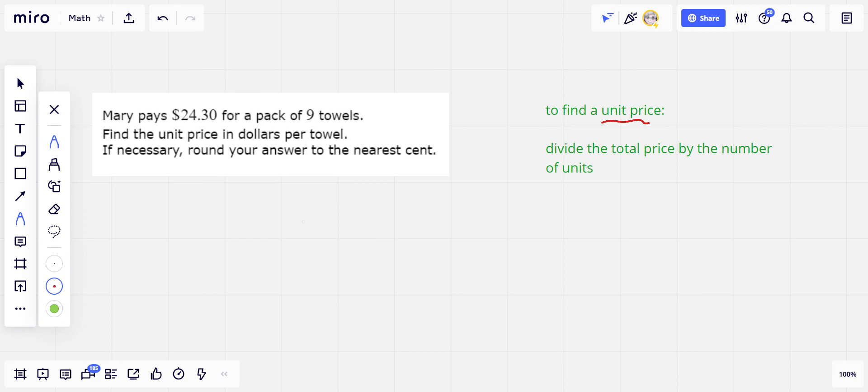Let's say you're buying eggs, and a half dozen costs $2, and a whole dozen costs $3.80. Which is the better deal? Well, if you're not sure, you can divide the total price by the number of units.